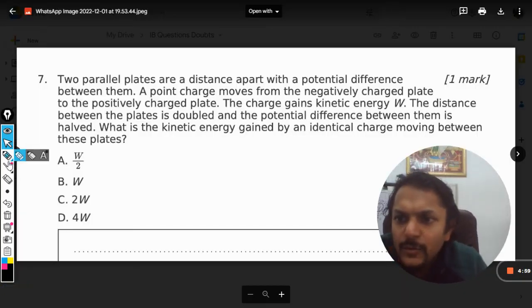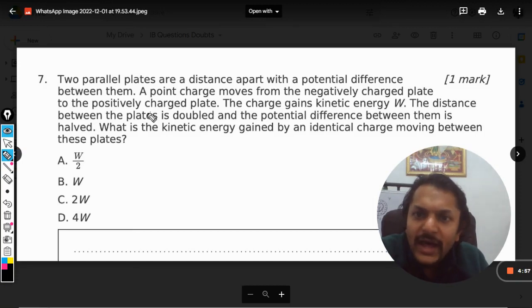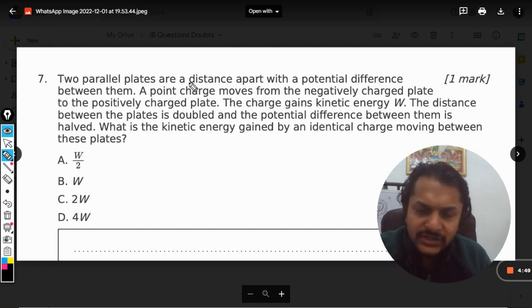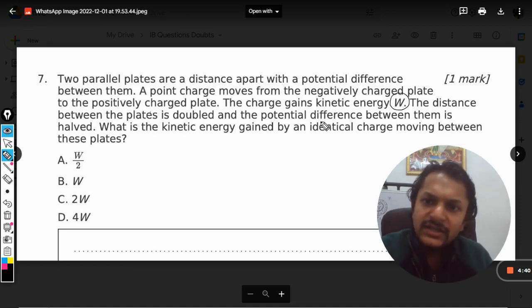Okay dear students, let's see what to do in this question. Two parallel plates are a distance apart with a potential difference between them. A point charge moves from the negative plate to the positive plate. The charge gains kinetic energy W. The distance between the plates is now doubled.